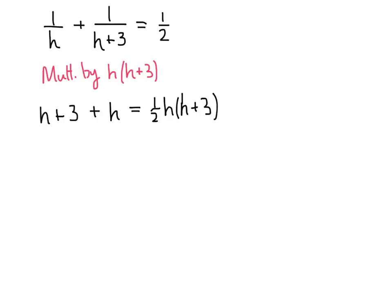Let's start multiplying this out. On the left-hand side, we have 2h plus 3, and on the right-hand side, we have one-half h squared plus three-halves h. One thing we can do to make dealing with fractions easier is to multiply both sides by two, and that'll get rid of these fractions on the right-hand side.